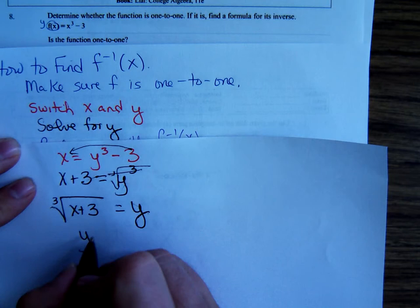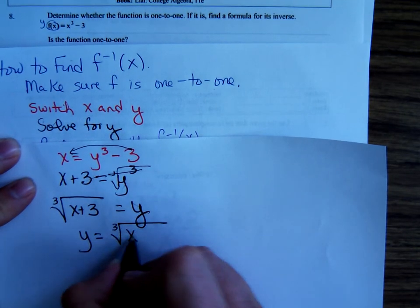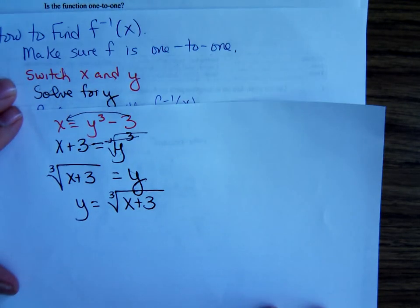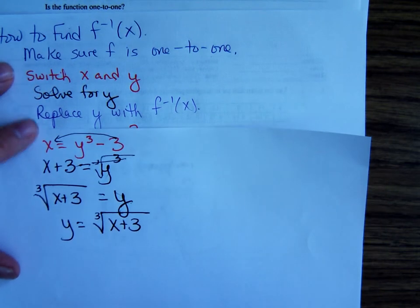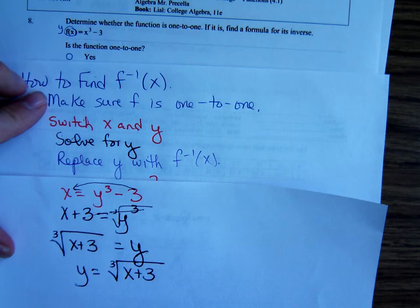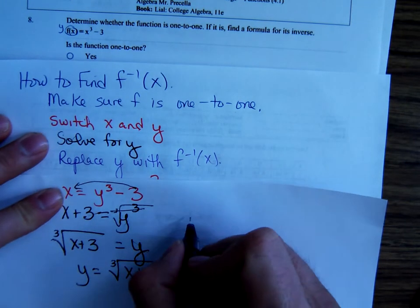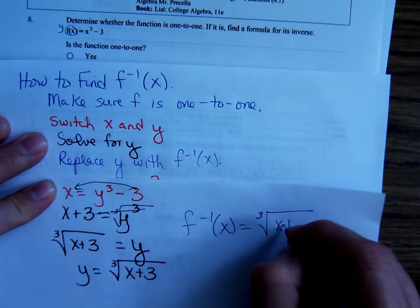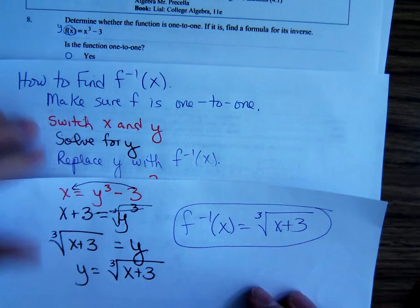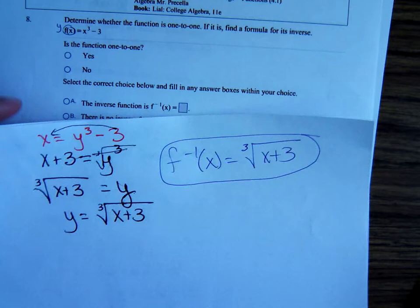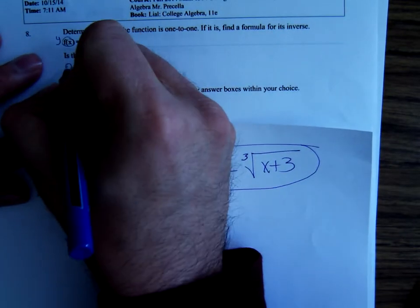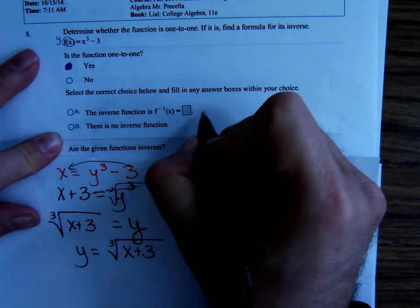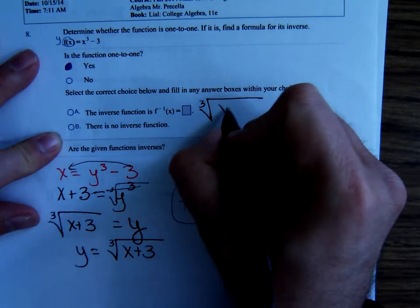I know some of y'all don't like that y on the right. So, there it is. Written with the y on the left. All that's left to do now is replace the y with the inverse notation. So, replacing y with f inverse. f inverse of x equals the cube root of x plus three. So, answer number eight. Is the function one-to-one? Yes. What's its inverse? F inverse of x is the cube root of x plus three.